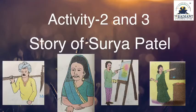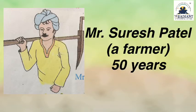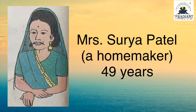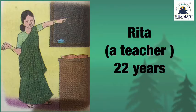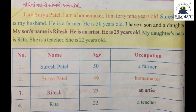Activity 2 & 3 — Story of Surya Patil. આ ઇત્ર છે Mr. Suresh Patil. એ farmer છે. એમની ઉંમર છે 50 વર્ષ. આ ઇત્ર છે Mrs. Surya Patil. એ homemaker છે — એટલે કે ઘરે કામ કરે છે. એમની ઉંમર 49 વર્ષ છે. આ ઇત્ર છે Ritesh — એ Surya Patil નો son છે, an artist. એની ઉંમર 25 વર્ષ. અને આ એની daughter Rita — એ teacher છે. એની ઉંમર 22 વર્ષ. આ ઇત્ર તમારી બુકમાં છે.